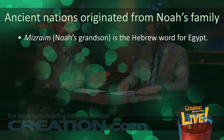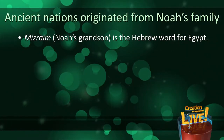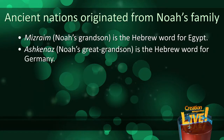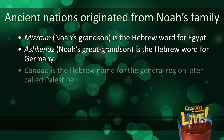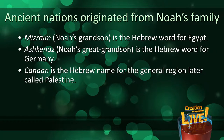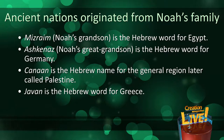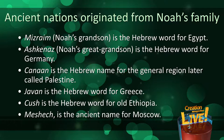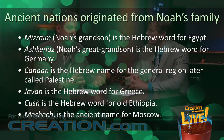There's also strong evidence that ancient nations originated with Noah's family. Mizraim, one of Noah's grandsons, is the Hebrew word for Egypt. Ashkenaz, a great-grandson of Noah, is the Hebrew word for Germany. Other grandsons of Noah include Canaan — the Hebrew name for the region later called Palestine — Javan, the Hebrew word for Greece, Kesh, the Hebrew word for Old Ethiopia, and Meshech, the ancient name for Moscow. You see these nations tied back to the grandsons of Noah.